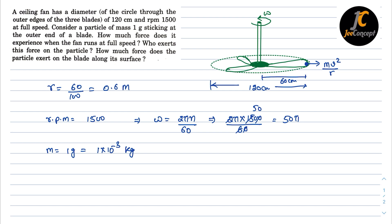we have to calculate this force which is equal to mv²/r or I can write mrω². Right, so the mass is 1 × 10⁻³, radius is 0.6, omega is 50π, that means (50π)². So this will become